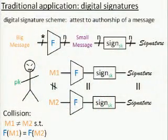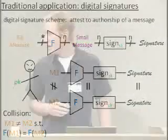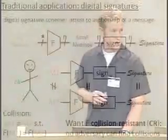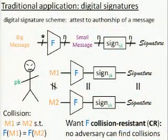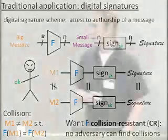If an adversary knows the public key but not the secret key, and can find two messages that aren't equal but hash to the same value, then the resulting signatures will be equal. The adversary can convince the key holder to sign message one, then present message two with that signature, tricking others into thinking message two was what was signed. This breaks our confidence in the digital signature scheme. We call this a collision — finding two messages M1 and M2 that aren't equal but hash to the same value.